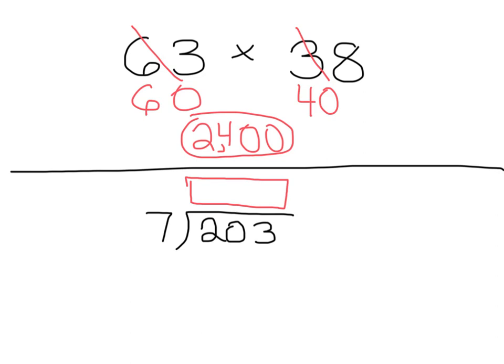What I did was I rounded to get my estimate. Now when we estimate quotients, it works differently. You can't round. So I have 203 divided by 7. Now if I wanted to estimate this quotient and I took the 203 and rounded it to 200, I haven't really done anything to make it easy to get an estimate in my head. When you want to get an estimate, you want it to be something you could do easily in your head. So this 200 isn't going to work here, because I don't know what 200 divided by 7 is in my head.